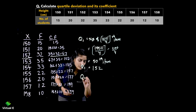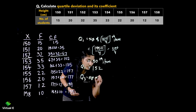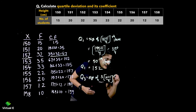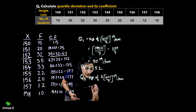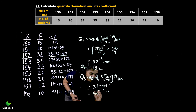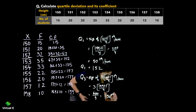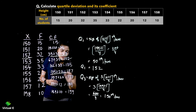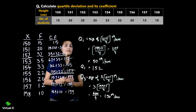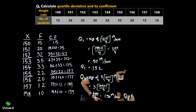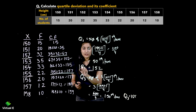Next, calculate Q3. The formula is 3(N+1)/4th item — do not forget the 3 outside. So we compute 3 into 199 plus 1 upon 4, which is 3 into 200 = 600 upon 4, giving the 150th item. Looking at cumulative frequency, 150 does not appear in earlier groups — it falls in the group with cumulative frequency 157. Therefore Q3 is 155.